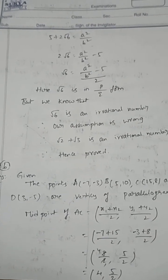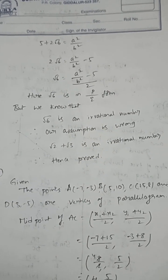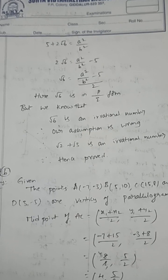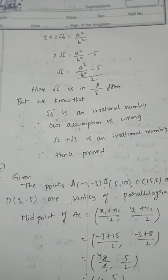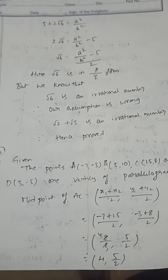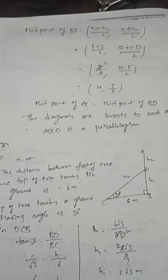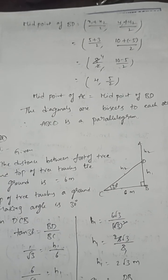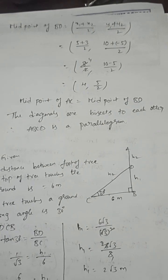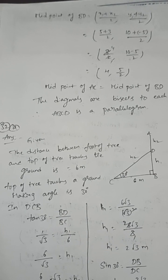The points A(-7,-3), B(5,10), C(15,8), and D(3,-5) are the vertices of a parallelogram. How can you verify? By using midpoints of diagonals. Midpoint of diagonal AC is (4, 5/2). Midpoint of BD is (4, 5/2). Midpoint formula is ((x₁+x₂)/2, (y₁+y₂)/2). Midpoints of the diagonals are the same, so the diagonals bisect each other. Therefore, ABCD is a parallelogram.